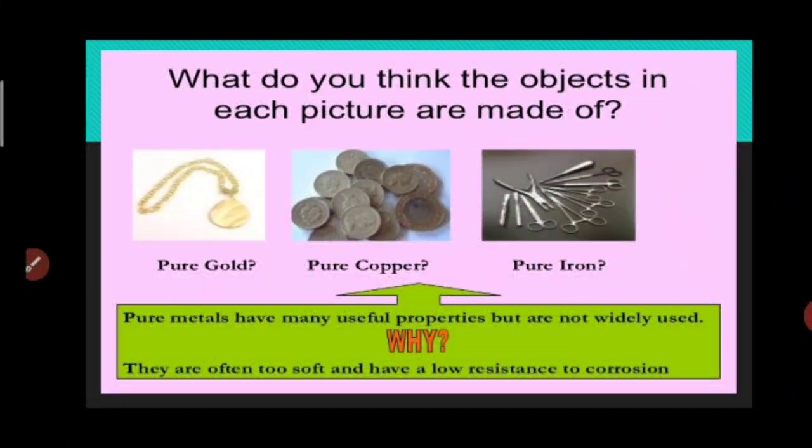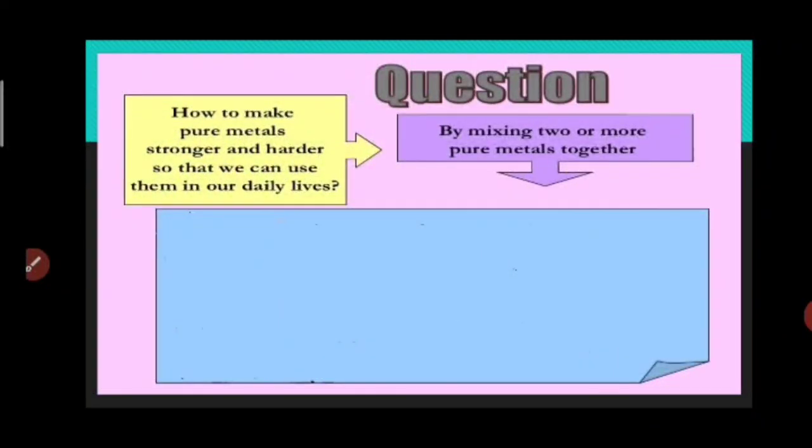The answer for both the questions is no. But we already know that pure metals have many useful properties but still are not widely used. Why is it so? It's because they are often too soft for making substances and have a low resistance to corrosion. Then how can we make pure metals stronger and harder in order to make them appropriate to use them in our daily lives? Is it possible?